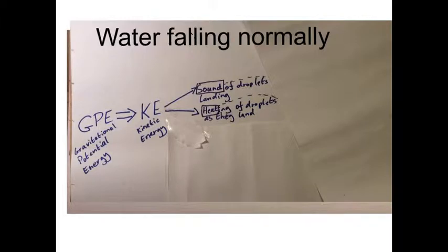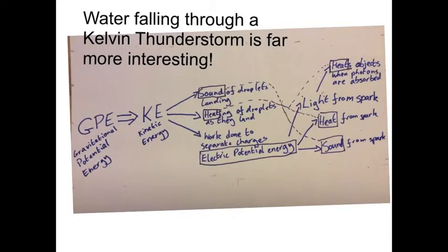Water that falls to the ground in a regular thunderstorm converts its gravitational potential energy to heat and sound, which is pretty cool. But I think you'll agree that it's nowhere near as cool as the heat and sound produced when water falls through a Kelvin thunderstorm.